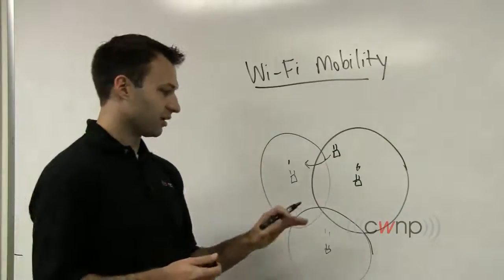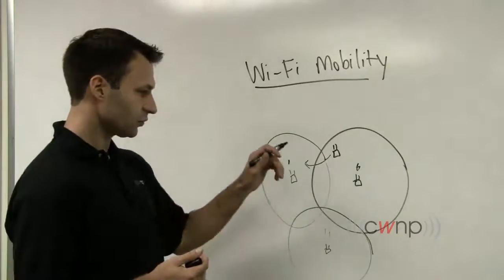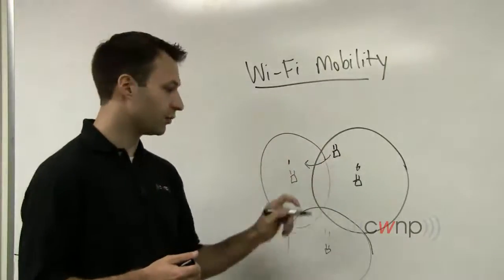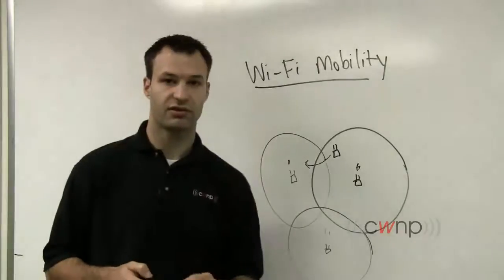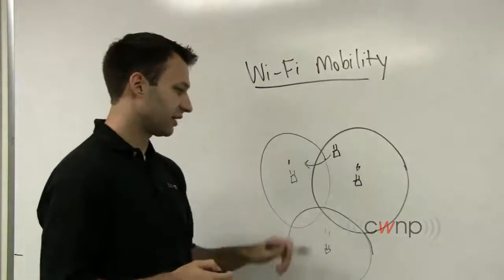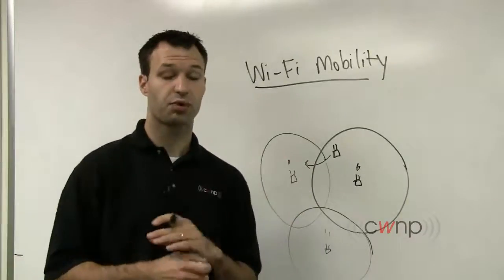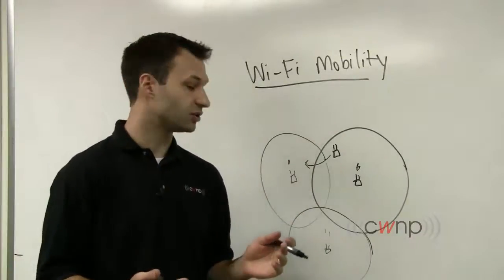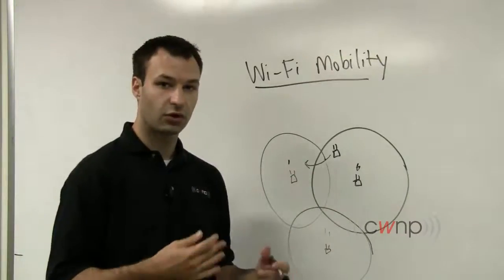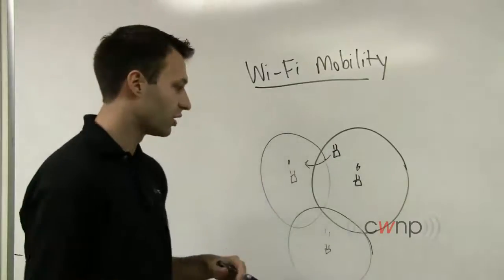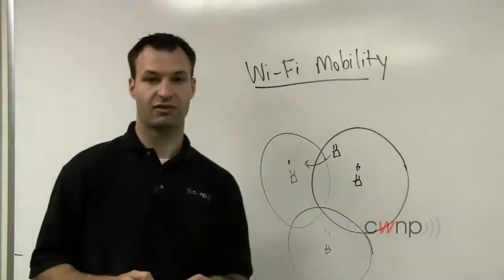Now, one of the big questions that comes along with roaming in Wi-Fi is, who makes the decision when the client moves from this access point to this access point? And the answer, with the exception of one vendor, is that the client makes that decision. And the client makes that decision based on some proprietary algorithm that determines that this access point's signal quality, or communications with that access point, are no longer as good as it expects communications with this access point over here to be.